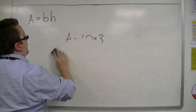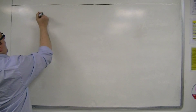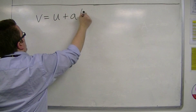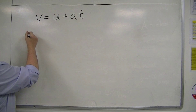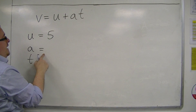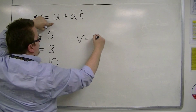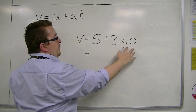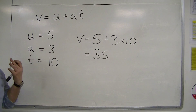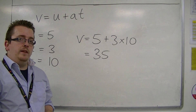Let's look at one more example using a formula such as V equals u plus at. This is a formula used in kinematics. So if u equals 5, a equals 3, and t equals 10, then v equals u plus a times t — 5 plus 3 times 10 — which is 35. This is how a formula works: you're given the values to put in, and then you work out what that missing value is going to be.